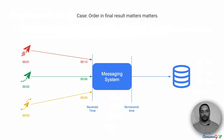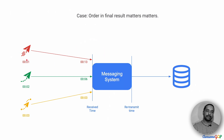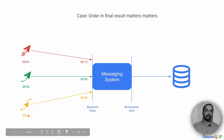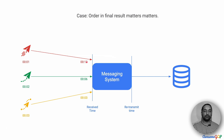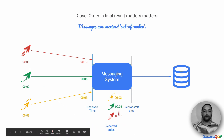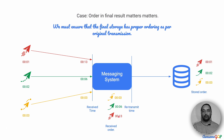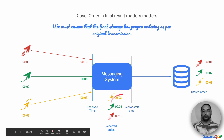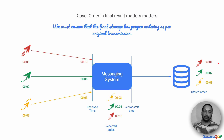Let's break the case down. We have messages being sent at seconds one, two, and three, which arrive at second 13, second 6, and second 3 for red, green, and yellow respectively. So we receive them in the opposite order of how they were sent, but we want to have them in the same order in which they were sent. That is the requirement.